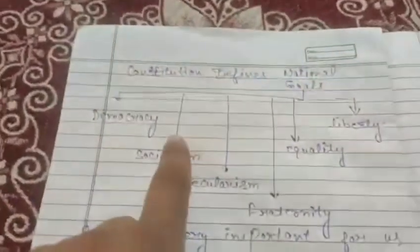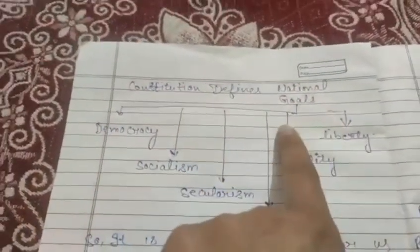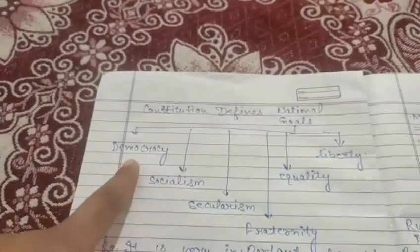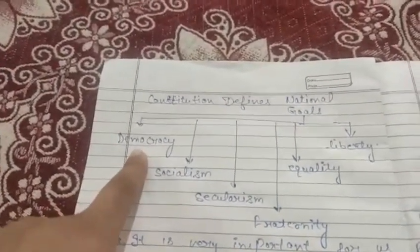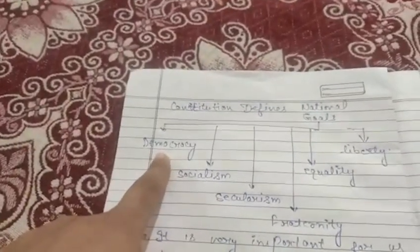The next one: our constitution contains national goals of our country. First one is democracy. It means in India each and every citizen has freedom.